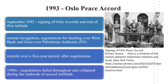The First Intifada ended in September 1993 with the signing of the First Oslo Accord, which provided a framework for negotiation between Israel and Palestinians. The agreements aimed at mutual recognition and set out conditions under which the West Bank and Gaza would be gradually handed over to the newly formed Palestinian Authority. The transfer was to be completed over a five-year interim period after negotiations between both sides. However, negotiations failed throughout the 1990s and collapsed completely during the outbreak of the Second Intifada.